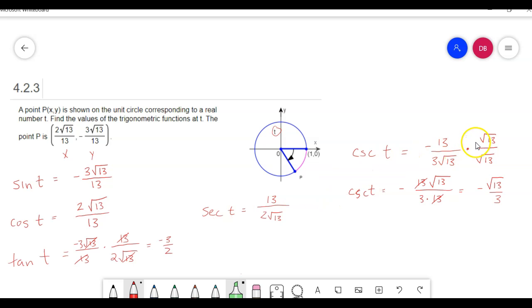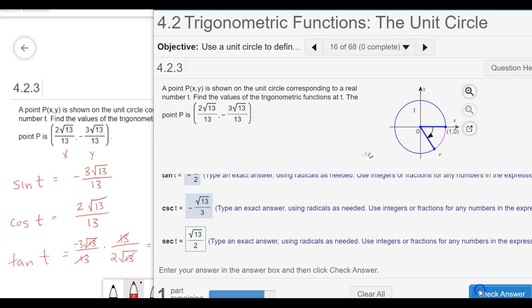These two together are going to be 13. So these will cancel with that 13, and I'm going to be left with the secant equal to square root of 13 halves. Notice secant, because cosine is positive, secant is going to be positive. So there's the square root of 13 halves.